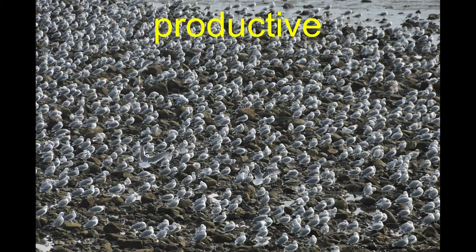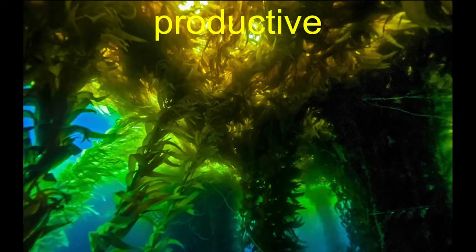But the coast is also really productive. You see these flocks of gulls near Leo Carrillo — highly abundant. And perhaps the most classic example here would be giant kelp, Macrocystis reefs.